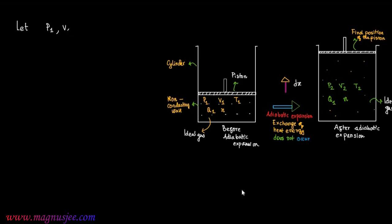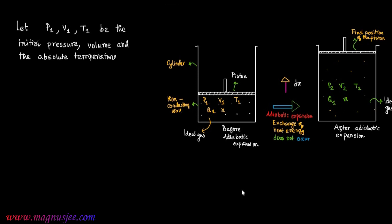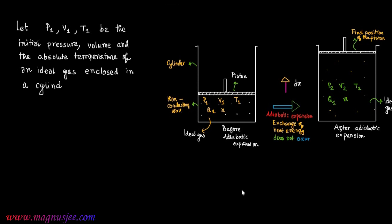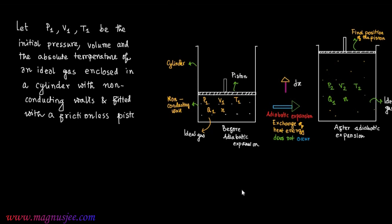Let P1, V1, T1 be the initial pressure, volume, and absolute temperature of an ideal gas enclosed in a cylinder with non-conducting walls fitted with a frictionless piston.